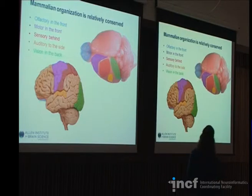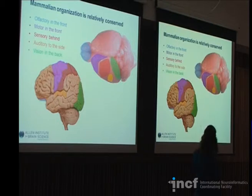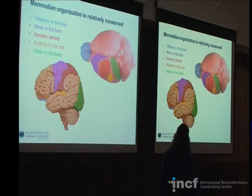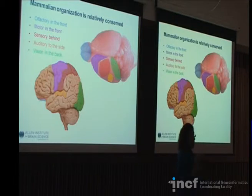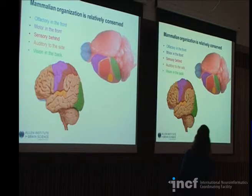In mammals, organization is relatively conserved, at least as far as the sensory motor cortices go. The olfactory cortex is in the front. Motor cortex tends to be towards the front, followed by somatosensory cortex for touch and pain perception behind it. Auditory cortex is off to the side, and in the very back is the visual cortex.